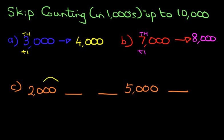Okay, let's go through this quickly. The first one, find the thousands column, add 1. 2,000. The next one is 3,000.